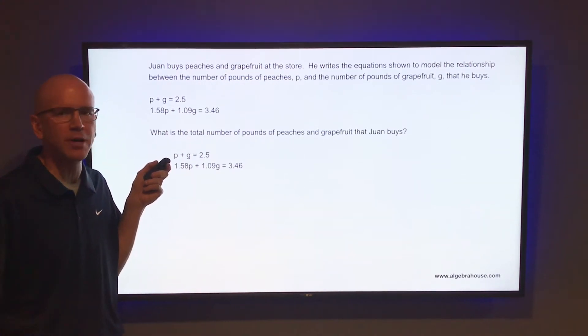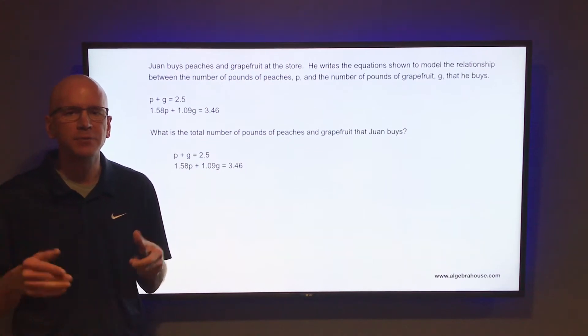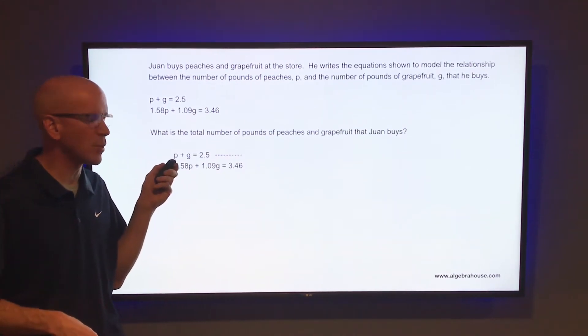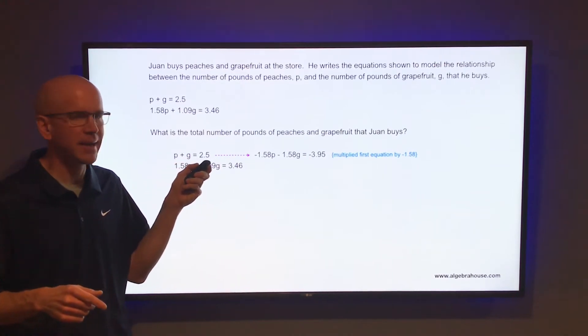I'm going to multiply that top equation by negative 1.58, so we'll have negative 1.58 P on the top, 1.58 P on the bottom, and when you add those two equations together, the P's will cancel. Just make sure you multiply each term by negative 1.58.